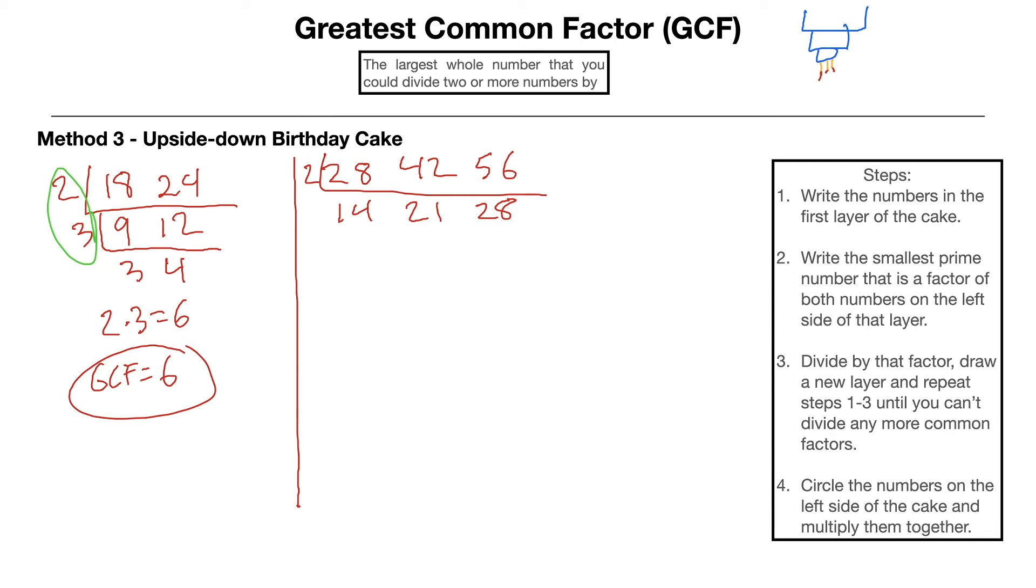We're going to think, is there another prime number that I can divide them by? Not 2, not 3, not 5, but I can divide them all by 7. So I'm going to put my layer right here, put a 7 on the left-hand side. 14 divided by 7 is 2, 21 divided by 7 is 3, and 28 divided by 7 is 4.